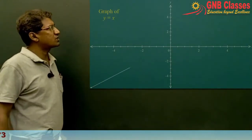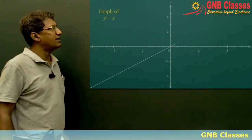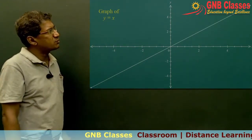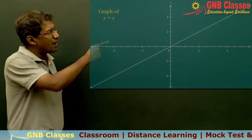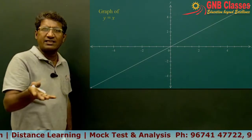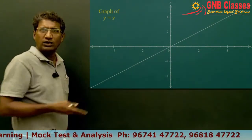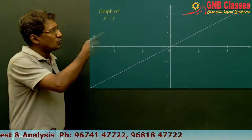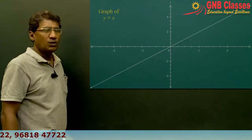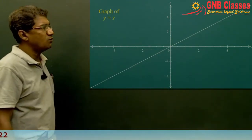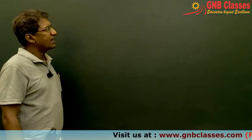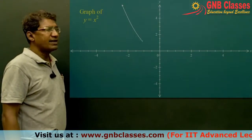The first graph is y = x. y = x is basically a straight line passing through the origin. You know the coordinate system from class 10 standard — this is the equation of a straight line passing through the origin: y = x.